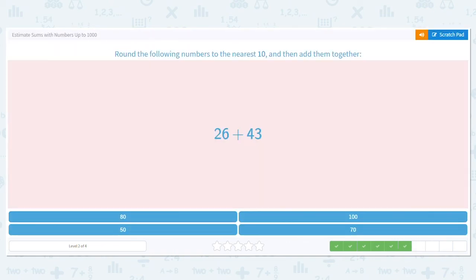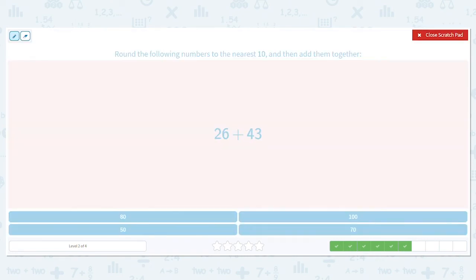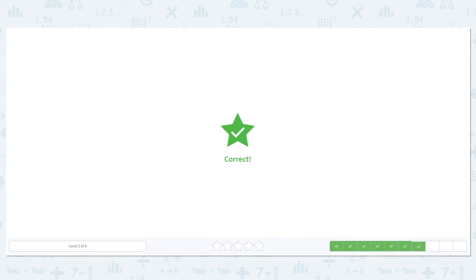Okay, next one. Still rounding to the nearest 10. What does 26 round to? It would either be 20 or 30, and it's 30 because 26 is closer to 30. How about 43? Would that round to 40 or 50? 40. It rounds down to 40. So if I add 30 plus 40, what is my answer? That equals 70. 70 is my estimate.